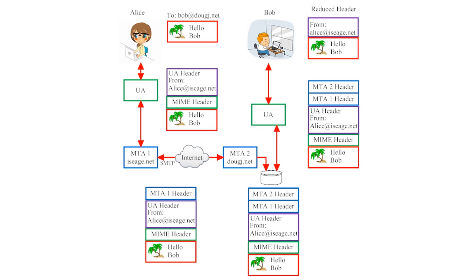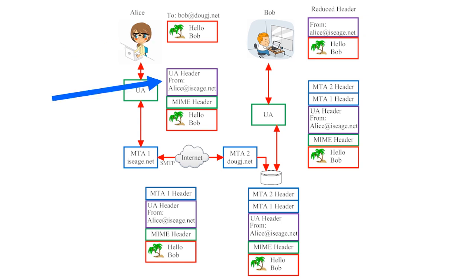Every email keeps an official record of what it is and where it's been. When Alice first composes the email, all it contains is a message and an address. However, once she hits send, her user agent attaches a header that gives the recipient more information. It will add a return address showing who the email came from, and it will also add something called a MIME header. MIME stands for Multipurpose Internet Mail Extension. When email protocols were first designed, they were only designed to handle plain text messages. MIME allows email systems to work around this limitation — the MIME header allows emails to carry design elements beyond plain text, such as images, special fonts, and file attachments. In this case, it will say that Alice's email contains text and an image.